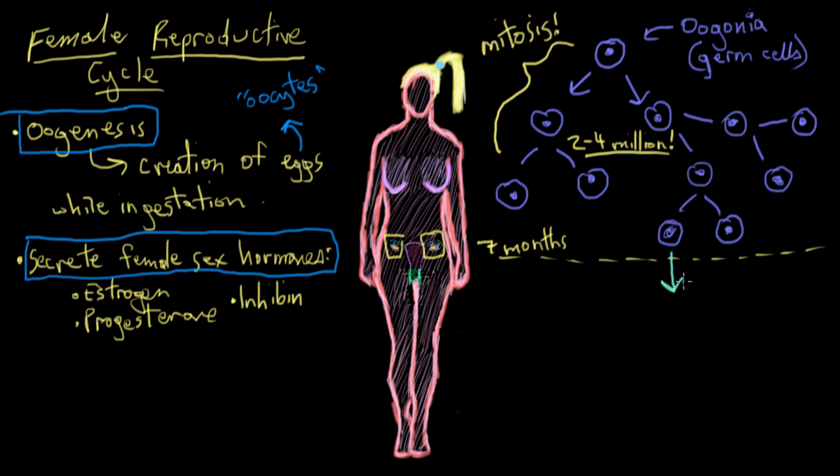So while she's still in fetal development, all of these oogonia that have been produced, they all develop into the next stage, which is a primary oocyte. And just remember that the two o's refers to egg, and the cyte, C-Y-T-E, refers to cell. So this just means egg cell, in case you were wondering.